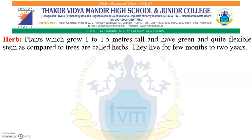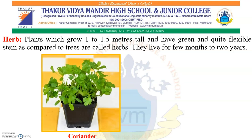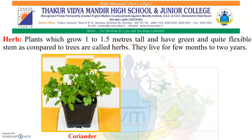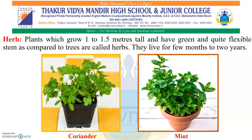Plants which grow 1 to 1.5 meters tall and have a green and quite flexible stem compared to trees are called herbs. They live for a few months to 2 years. Examples include coriander and mint. In summary, trees are the tallest, then shrubs in between, and finally the smallest are herbs.